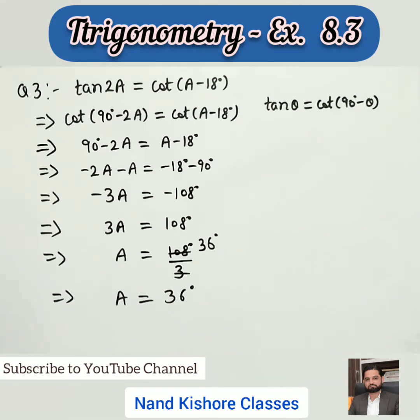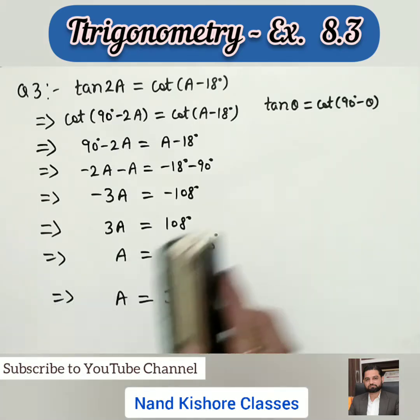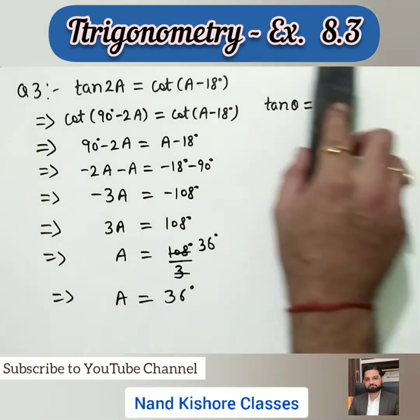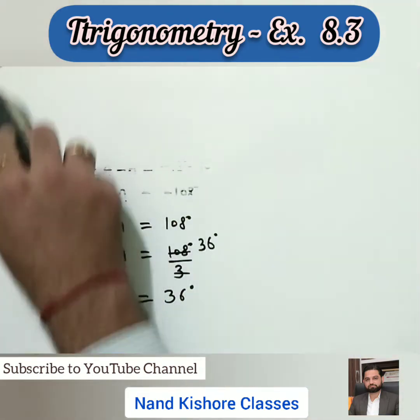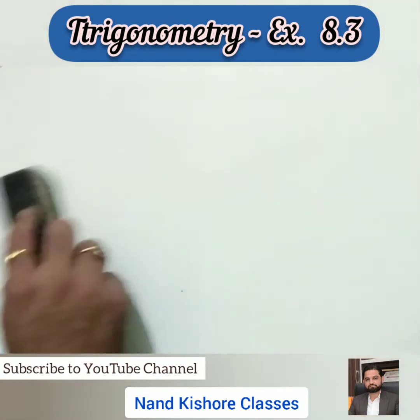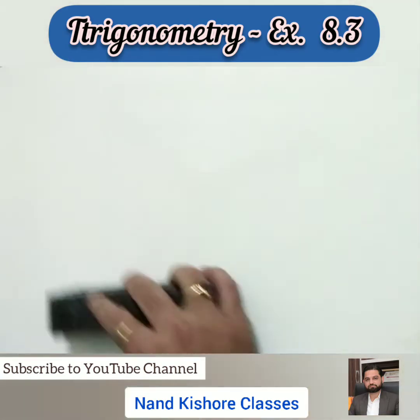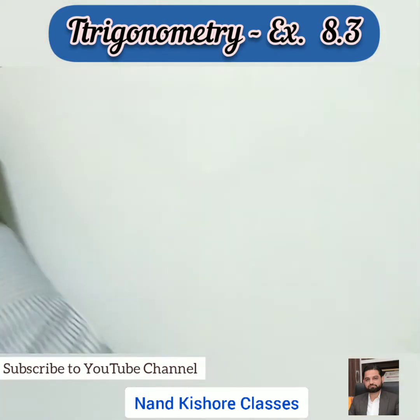Dividing 108 by 3, the value of a comes out to be 36 degrees. In these kinds of questions, we need to make the trigonometric ratios the same on both sides. Let's move ahead to question number four.